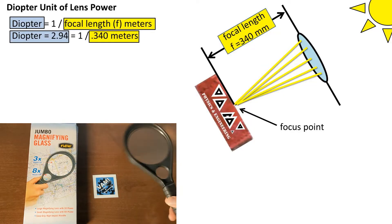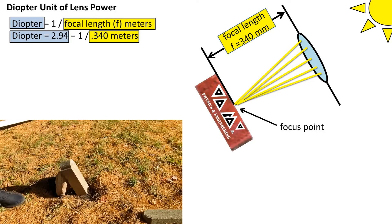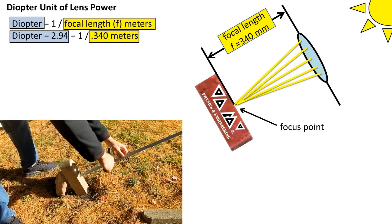Now we can plug this value into the equation and we get a power of 2.94 diopters, which is where the box gets the three times magnification value from.